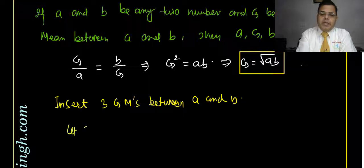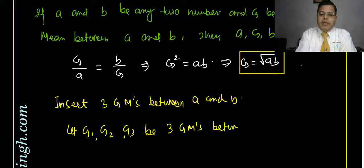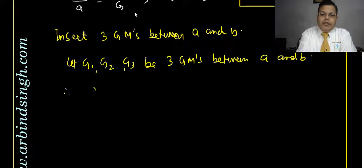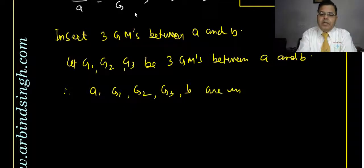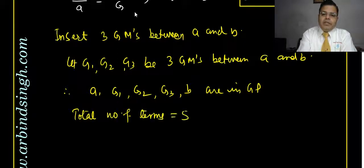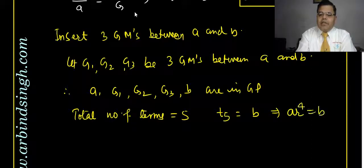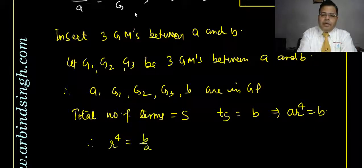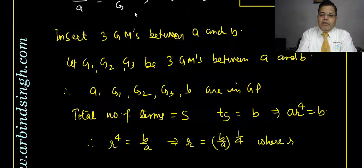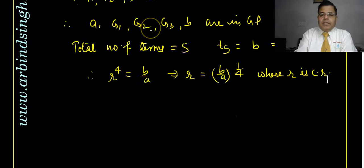Let g1, g2, g3 be three geometric means between a and b. Then a, g1, g2, g3, b are in GP. The total number of terms is 5, and the fifth term b equals a·r⁴. Therefore r⁴ = b/a, and hence r = (b/a)^(1/4), where r is the common ratio.